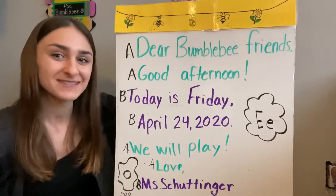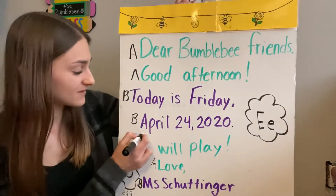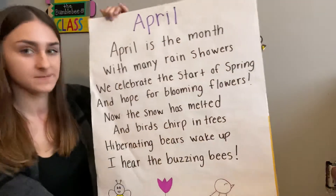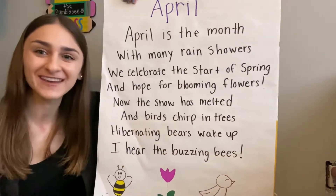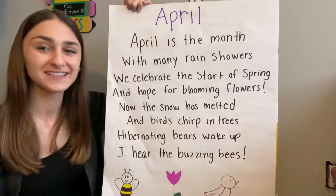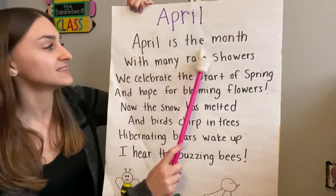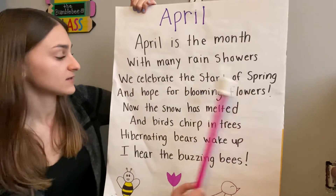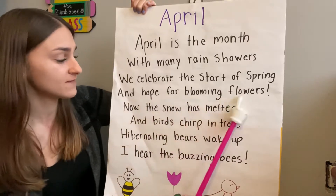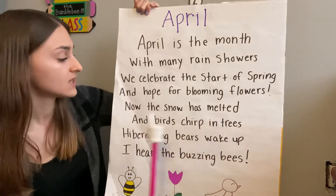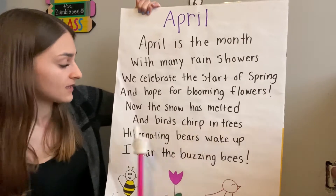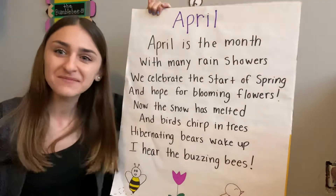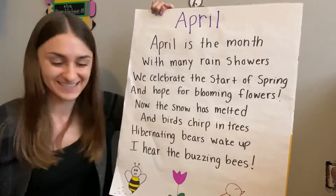Okay, what month is it Bumblebees? It is April. So let's practice our April poem. On the count of three, we're gonna read it together. Are you ready? One, two, three. April is the month with many rain showers. We celebrate the start of spring and hope for blooming flowers. Now the snow has melted and birds chirp in trees. Hibernating bears wake up — I hear the buzzing bees. What does a buzzing bee sound like? Buzz! Nice job.